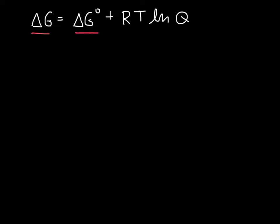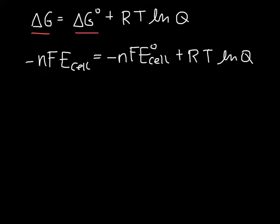We can substitute in for the ΔG terms what we have derived, which is nFE_cell. So now we have -nFE_cell = -nFE°_cell + RT ln Q, and we can rewrite this to be the cell potential is equal to the standard cell potential minus RT divided by nF ln Q.